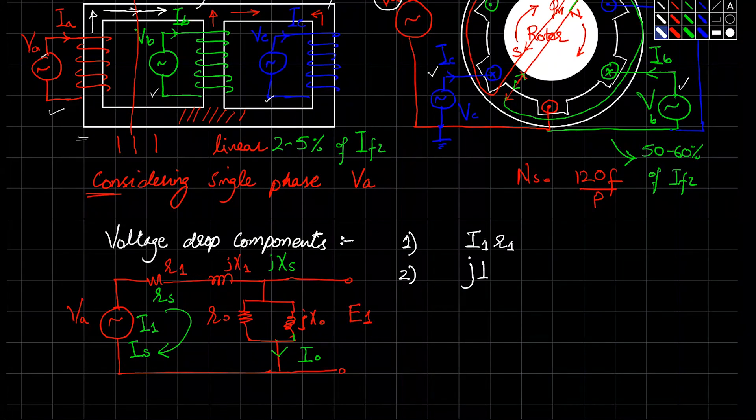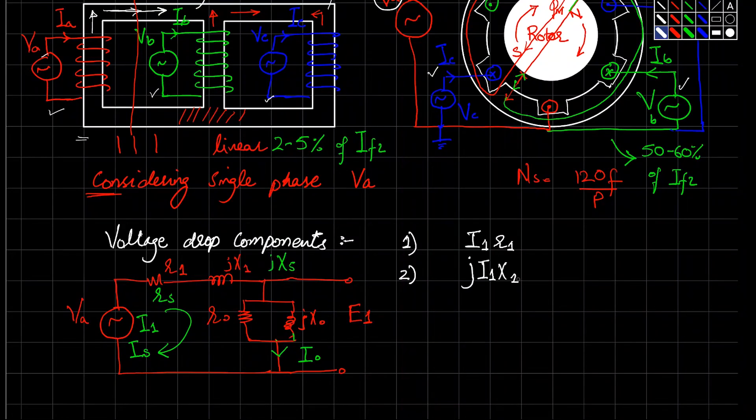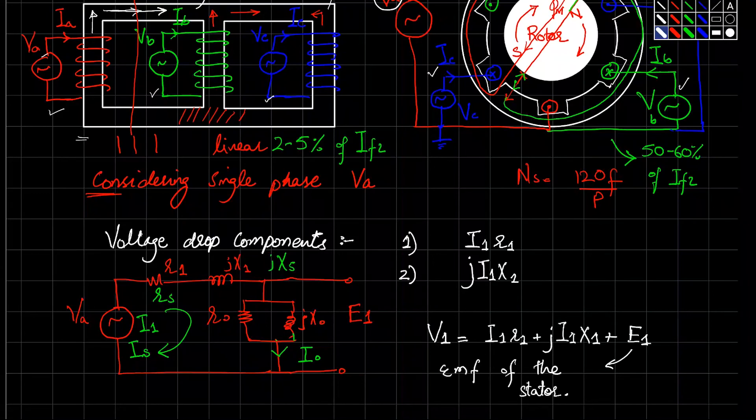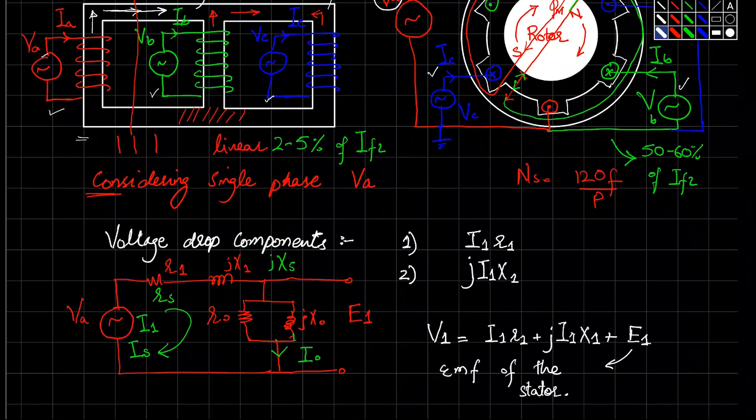The second voltage drop component in induction motor is in terms of j*I1*X1. This is the leakage reactance. The overall equation is: the input voltage V1 is equal to I1*R1 + j*I1*X1 + E1, where E1 is the EMF of the stator.